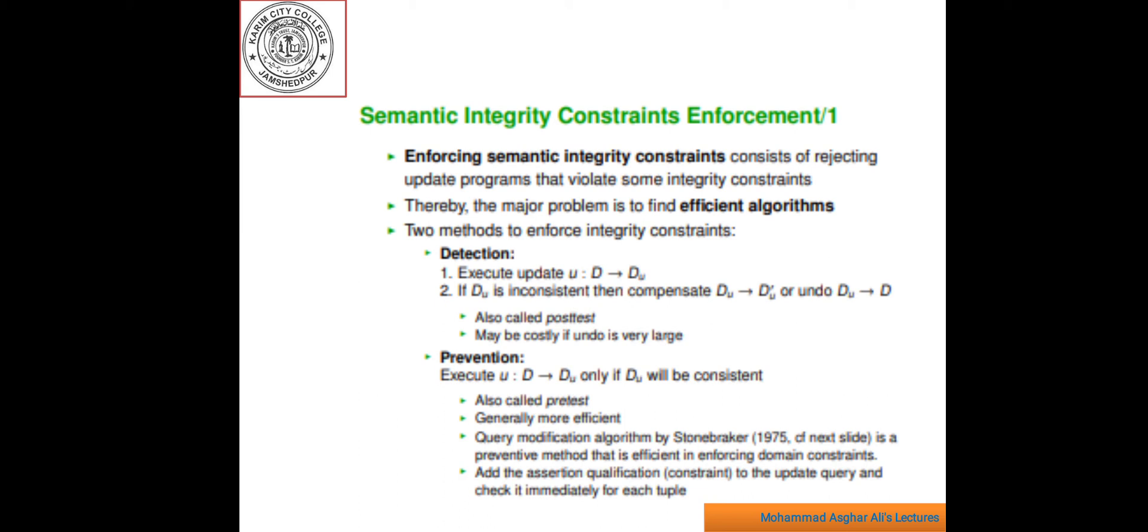Here, two basic methods permit the rejection of inconsistent update. The first one is based on the deletion of inconsistencies. The update u is executed causing a change of database state d to du. The enforcement algorithm verifies by applying tests derived from these constraints that all relevant constraints hold in state du. If state du is inconsistent, the DBMS can try either to reach another consistent state d dash u by modifying du with compensation action or to restore state d by undoing its volume. Since these tests are applied after having changed the database state, they are generally called post-test. This approach may be inefficient if a large amount of work must be undone in the case of integrity failure.